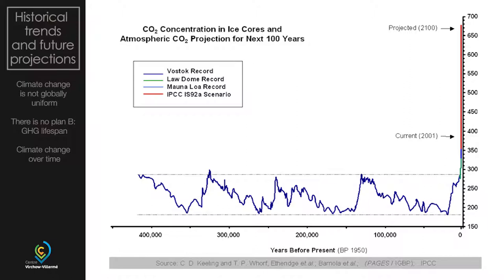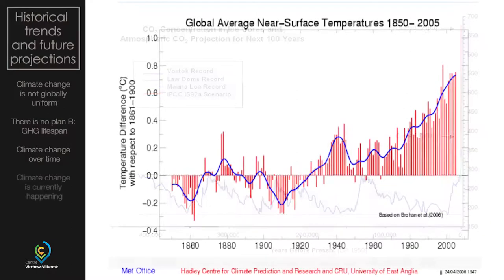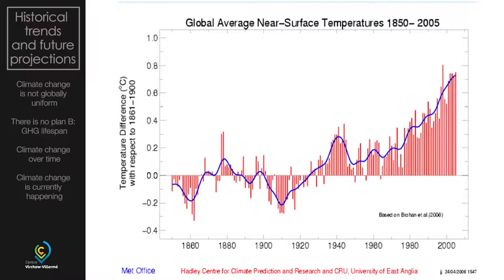Ice ages came and went, and then in the last sliver of time on the right-hand side, it shoots up. What happened? This is humankind, who has industrialized and is now for the first time using coal, oil, and gas massively to power our industrial revolution. If you blow up that sliver on the right-hand side, you see a picture that also goes up — the temperature rise since the beginning of industrialization. Looking at 1850–1860, that's roughly when the effects of industrialization became really felt.